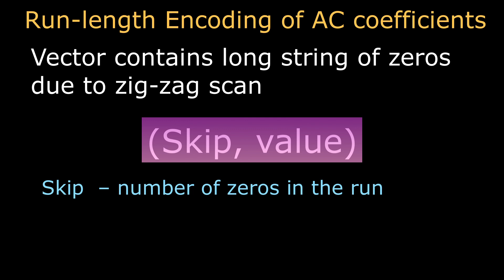For example, consider a sequence 3, 0, 0, 0, 3. Then the number of zeros in the run is 2, and value represents the next non-zero coefficient present in the sequence.